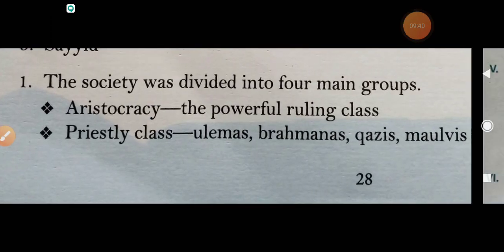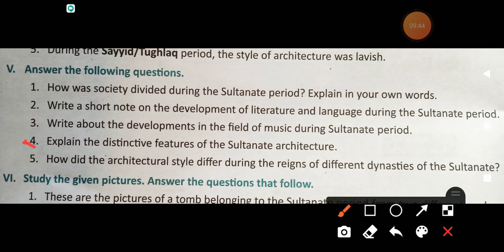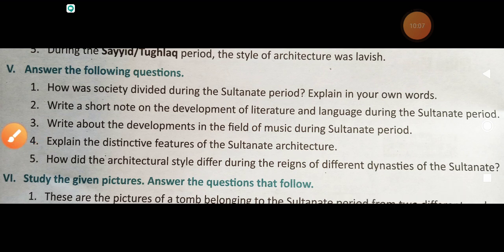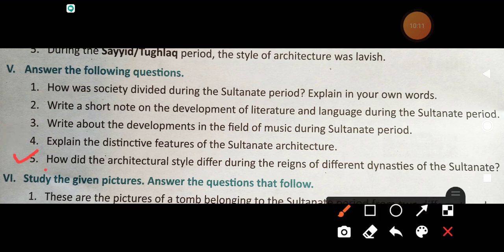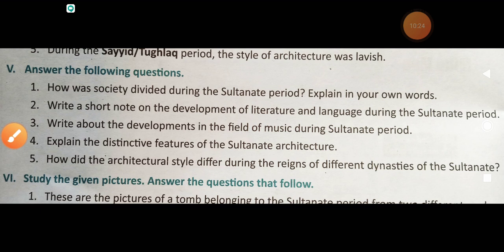Next is question number 5: How did the architectural style differ during the reigns of different dynasties of the sultanate? Note down, students — question number 5.